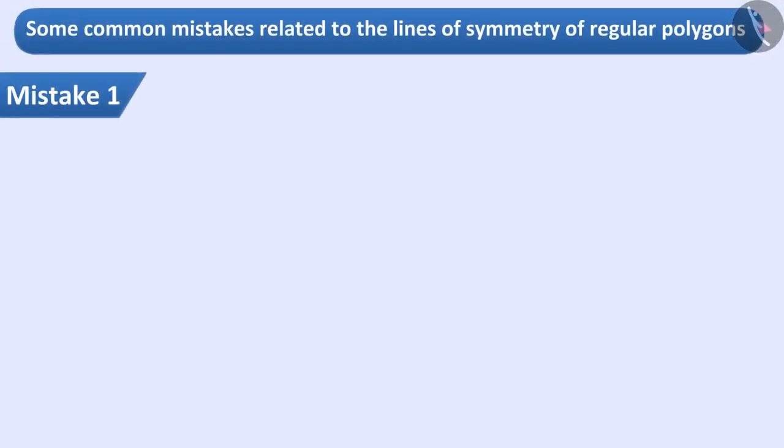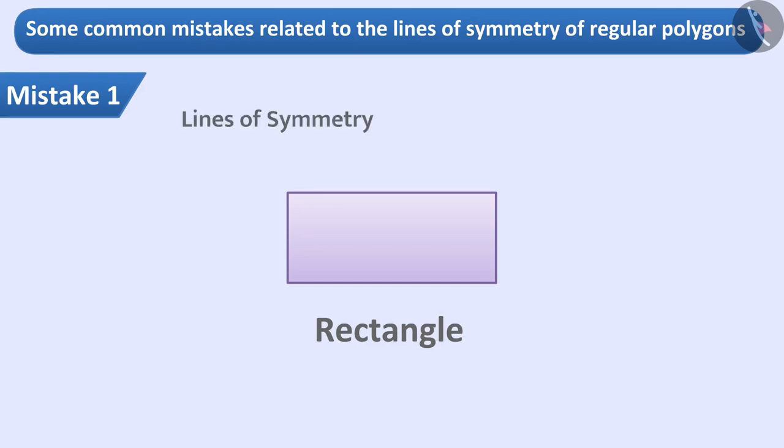Mistake 1. If children are asked how many lines of symmetry are there in a rectangle, they answer 4. They think that vertical and horizontal lines of symmetry can be drawn in a rectangle as well as lines of symmetry along the diagonals.